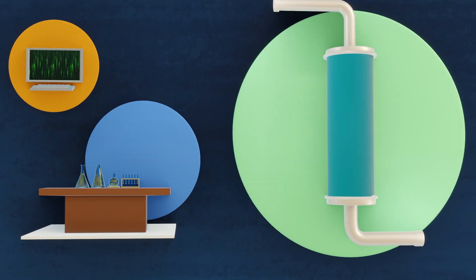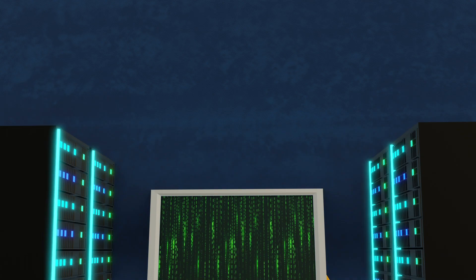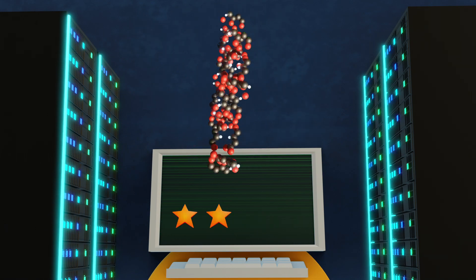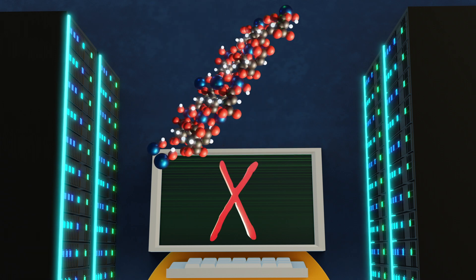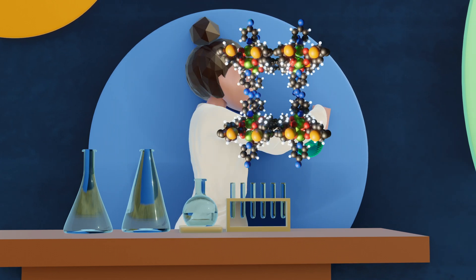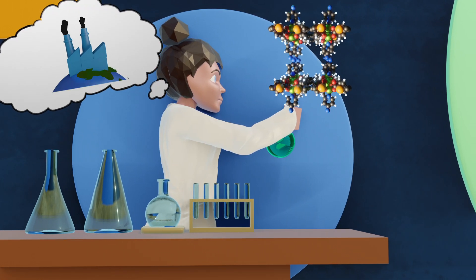In PRISMA, we use supercomputers to screen thousands of different new materials, predicting their properties and ranking their performance. The best candidates are synthesized in the lab and we test their performance according to the intended carbon capture application.